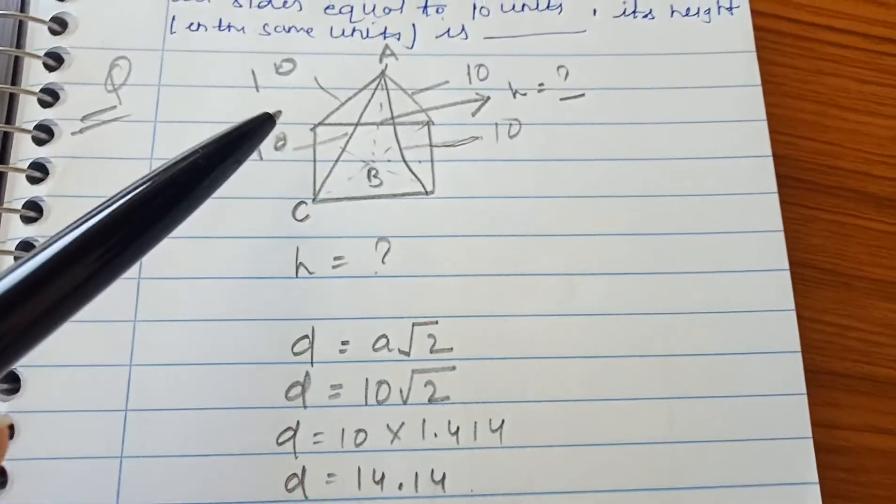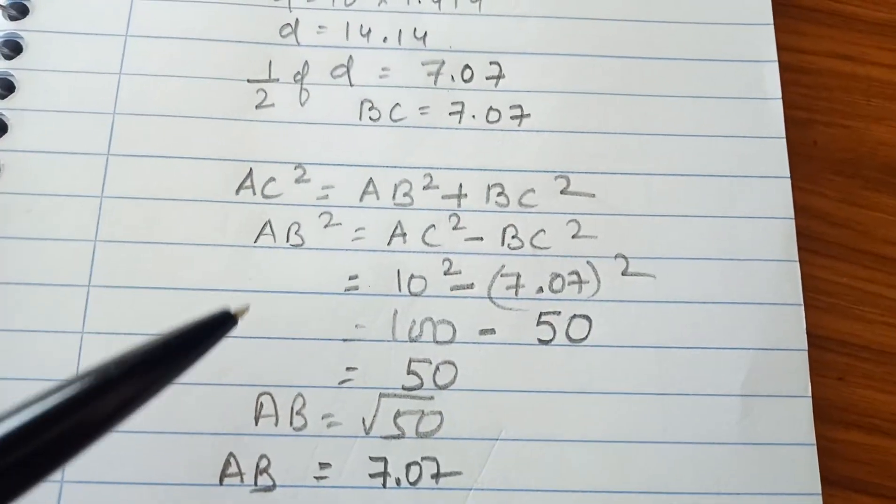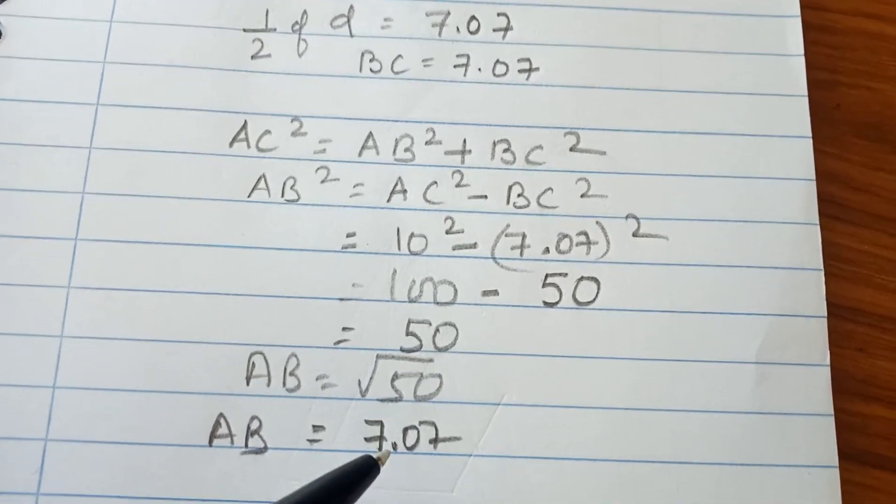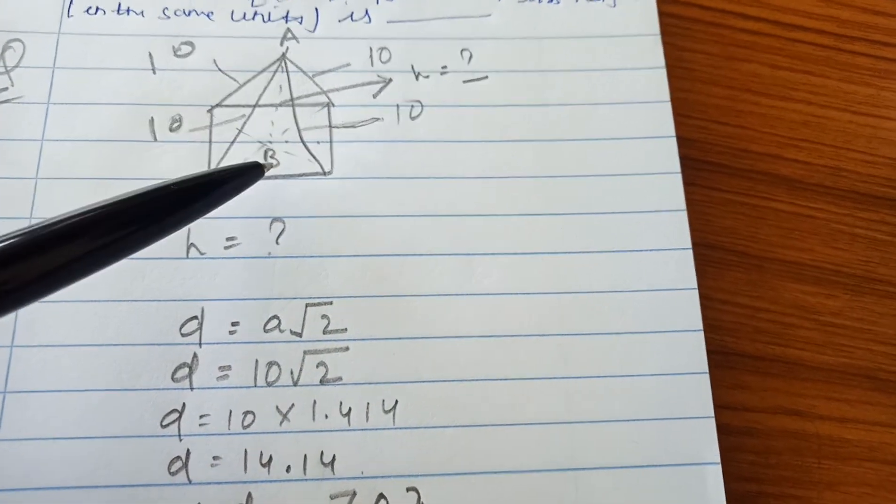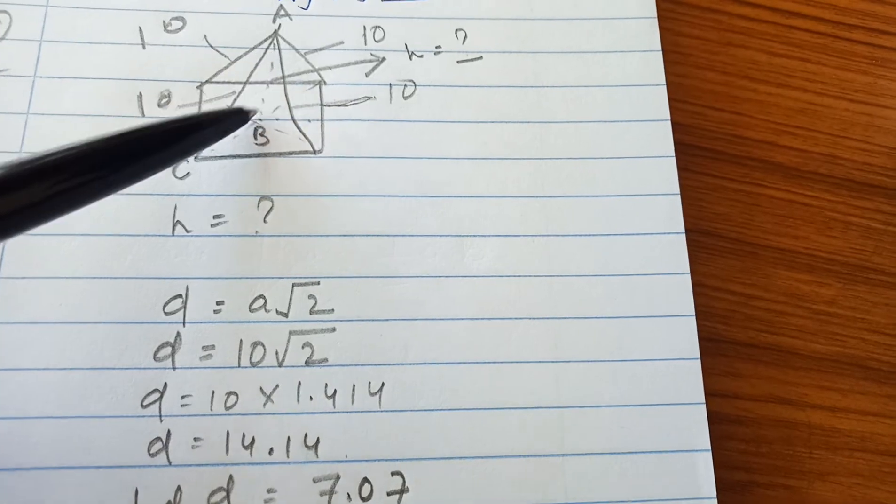So AB² is equal to 50, and AB is equal to 7.07. Using the Pythagorean theorem in triangle ABC, we found AB, which is the height, as 7.07.